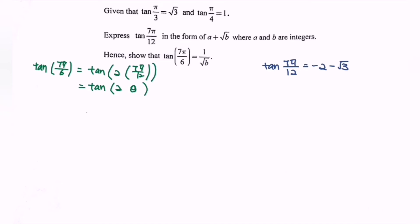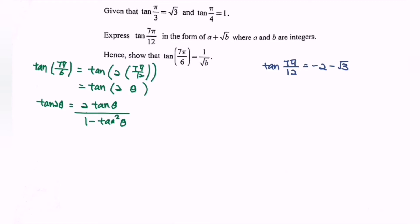Make use of the double angle formula: tangent(2θ) = 2·tan(θ) / (1 − tan²(θ)). Here, tangent(θ) = −2 − √3.